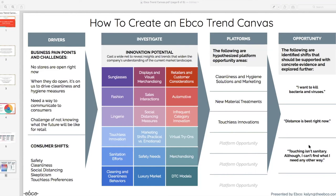The shifts we identified that fed into this include consumers moving from wanting more naturals and non-toxics to wanting things that kill bacteria and viruses. Also, consumers who previously wanted really high service — especially in fine jewelry where service is the standard of excellence — to now thinking that distance is best. They don't want close contact with a sales associate or another human. And the idea that touching isn't sanitary, which really flips the category on its head since most of fine jewelry retail is through trial — actually seeing the jewelry, trying it on, feeling the materials. This gives you a good sense of how we created one.